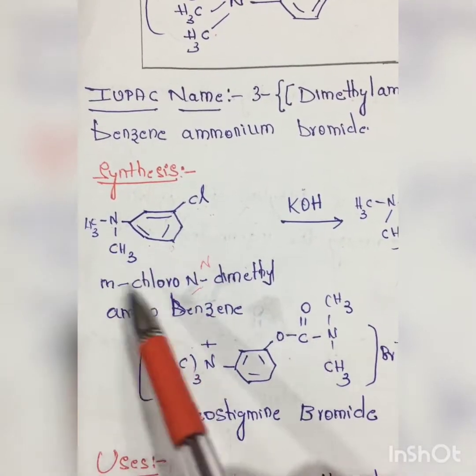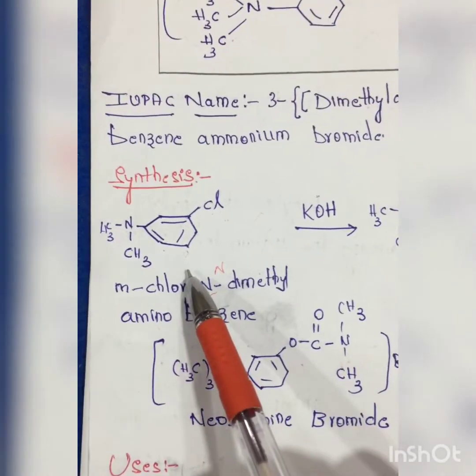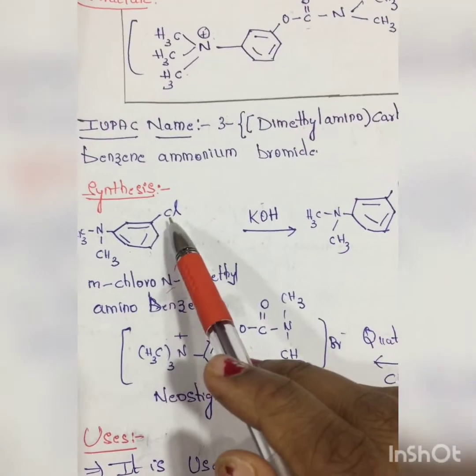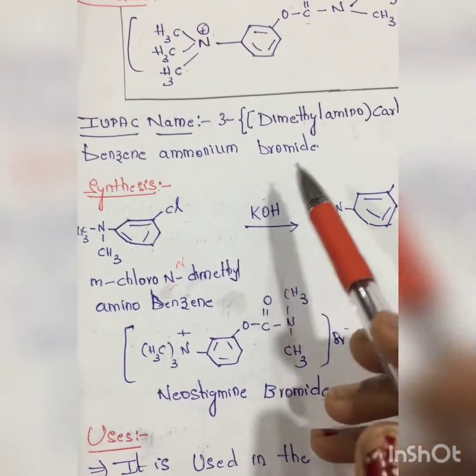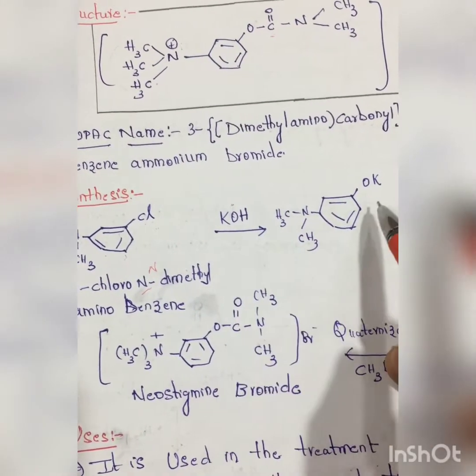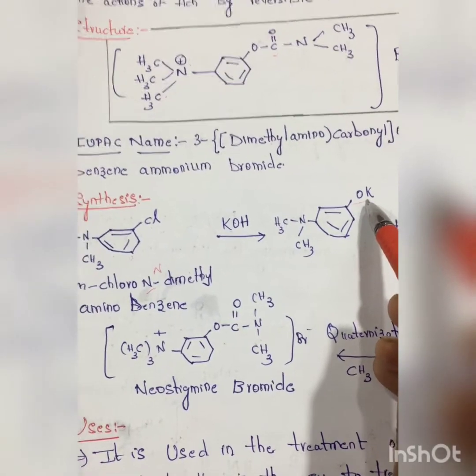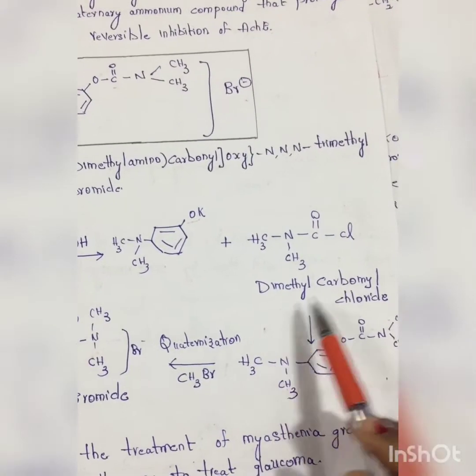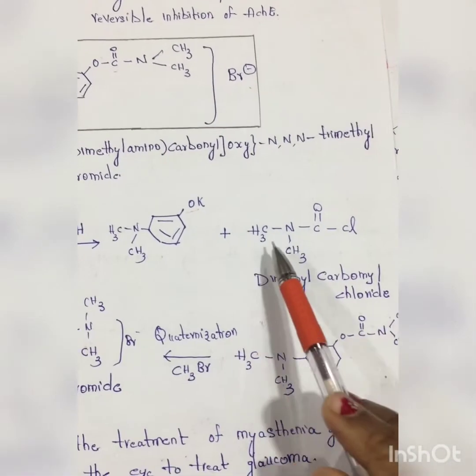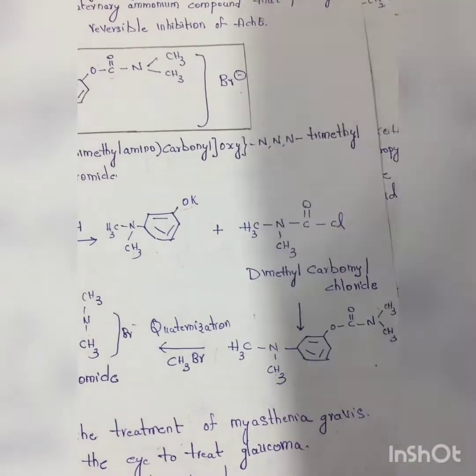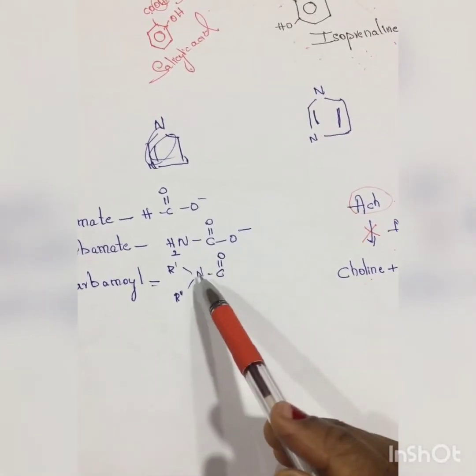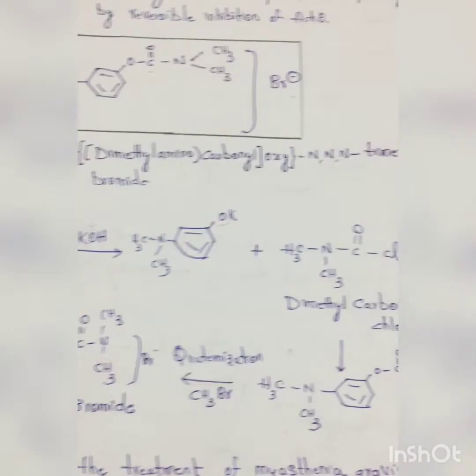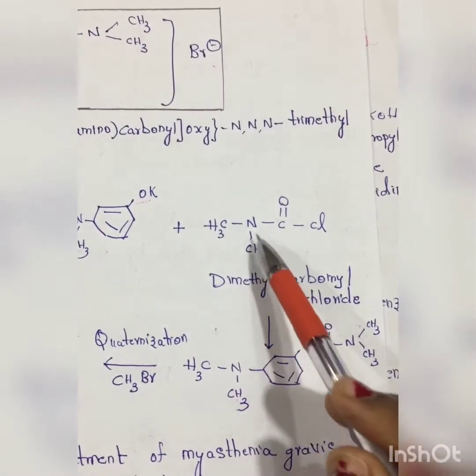When this is treated with a base, that is KOH potassium hydroxide - see, obviously chlorine is here, so this OK will be placed here. Now next, this one when I treat this with dimethyl carbamyl chloride - what is this carbamyl moiety? Carbamyl moiety is C double bond O-N-R1-R1 dash. Here R1 and R1 dash are both methyl, so dimethyl carbamyl chloride.